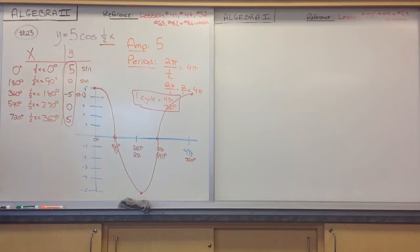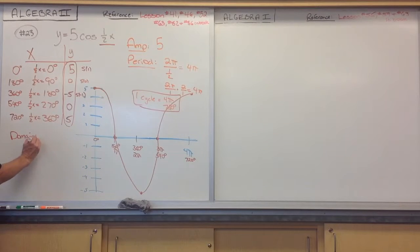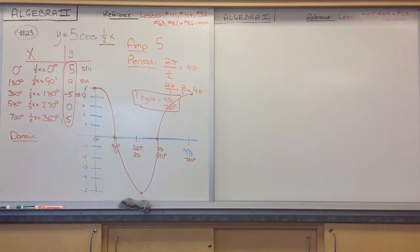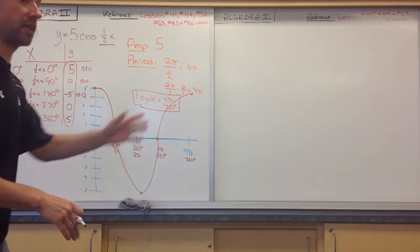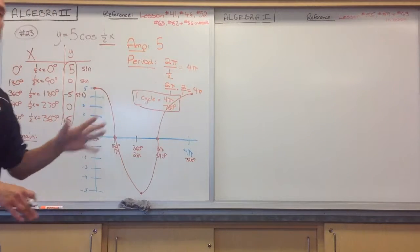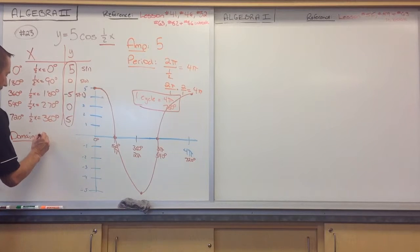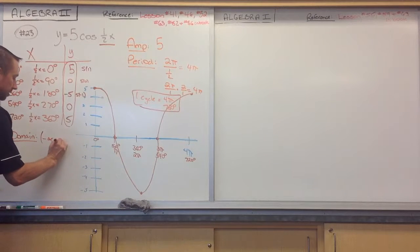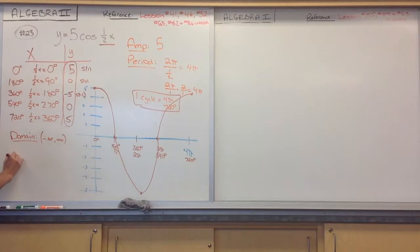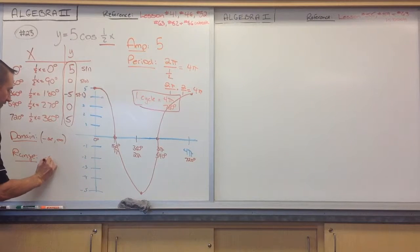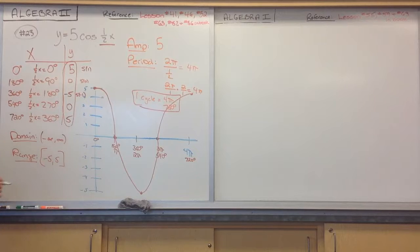Now all you need to do is the domain and range. The domain — remember, this function continues on in either direction, so the domain is all real numbers. The range is negative 5 to positive 5, including those endpoints.